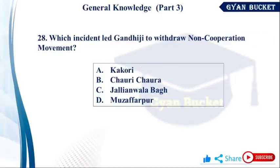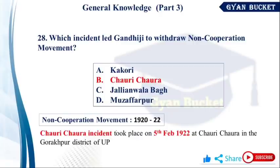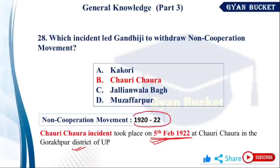Which incident led Gandhi to withdraw the Non-Cooperation Movement? Gandhi withdrew the Non-Cooperation Movement due to the Chauri Chaura incident — in February 1922, in Gorakhpur district, where a police station was set on fire. Gandhi withdrew the Non-Cooperation Movement, and it ended in 1922.